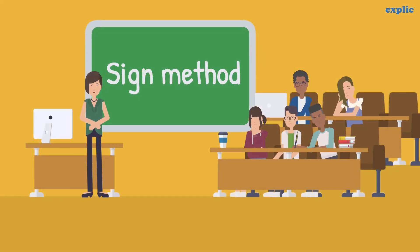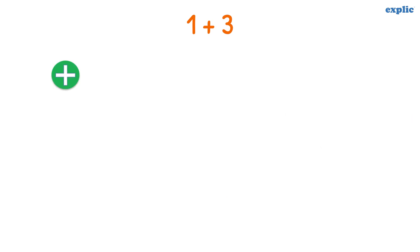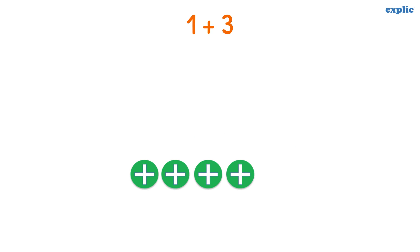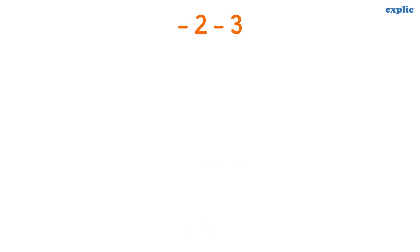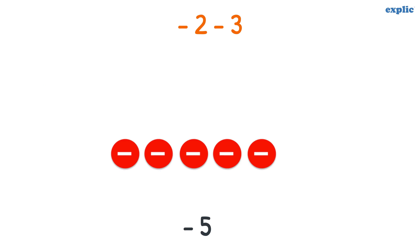The addition and subtraction of integers can also be performed using a sign method. To add 1 and 3, take 1 plus sign and 3 plus signs. Together they make 4 plus signs. Hence the answer is plus 4. To solve minus 2 and minus 3, take 2 minus and 3 minus signs. Together they make 5 minus signs. Therefore the answer is minus 5.